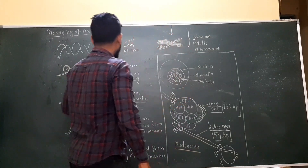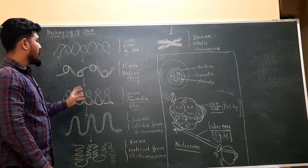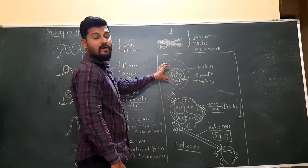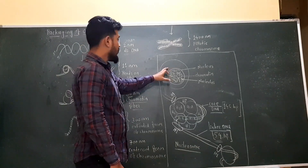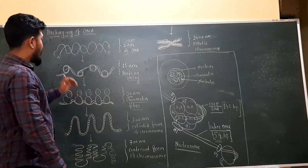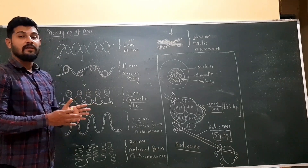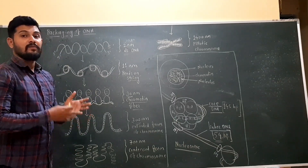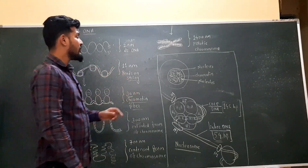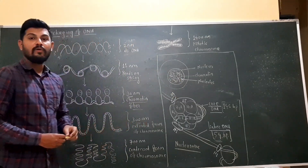In this way, the packaging of DNA occurs, and due to such packaging, a long DNA is placed inside the small nucleus that is around 10 raised to minus 6 meters in its dimension. The size of the DNA is decreased by around 10,000 times, so that the DNA is packaged inside the small nucleus. This is all about the packaging of DNA.